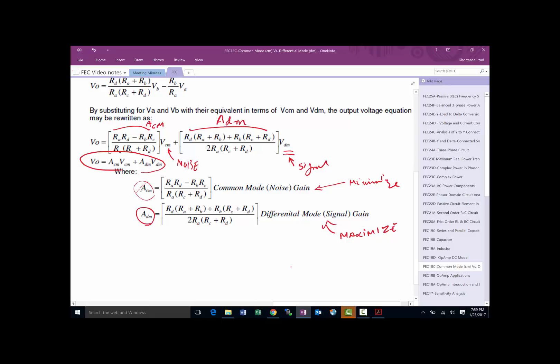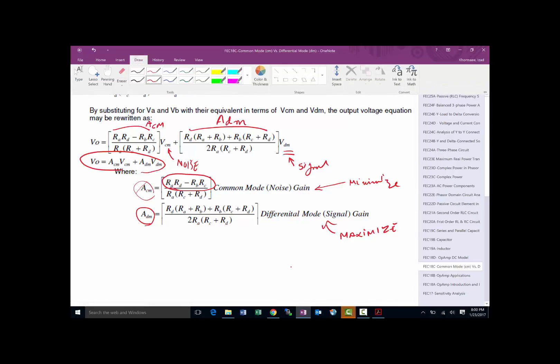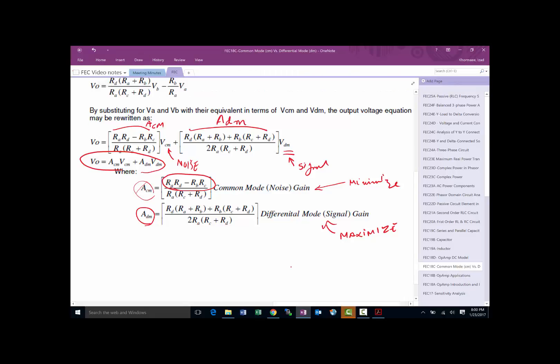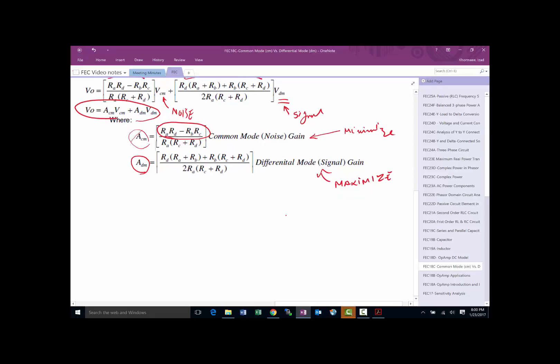How are we going to minimize this? If you want to minimize this, the absolute minimum would be when the numerator goes to zero - it can't be smaller than zero. If in the ideal situation we were to make ACM equal to zero, the common mode noise gain goes to zero.